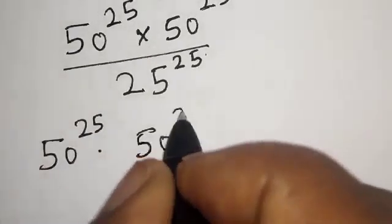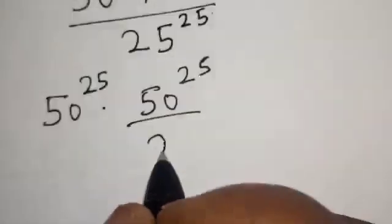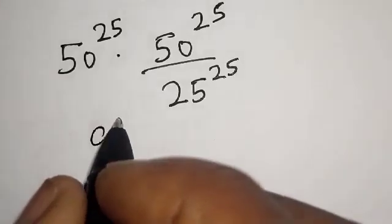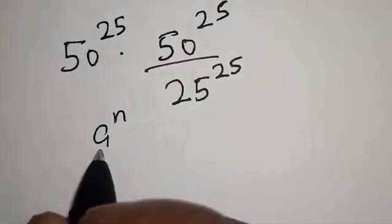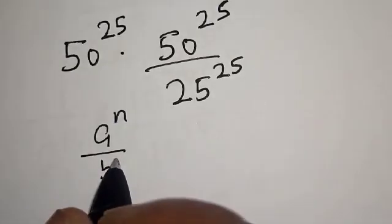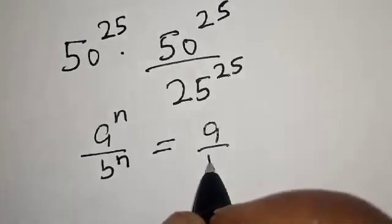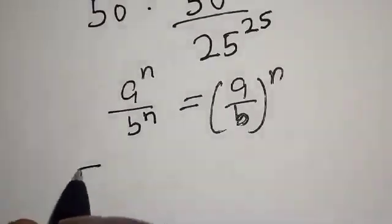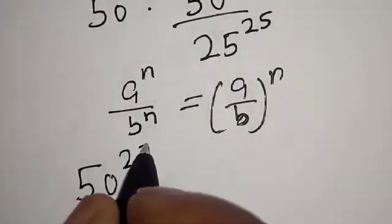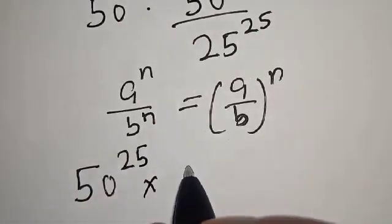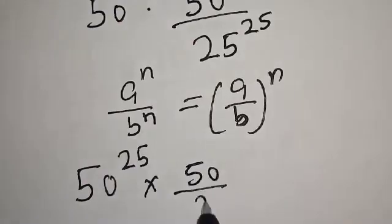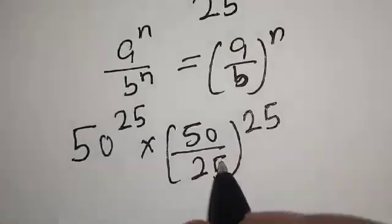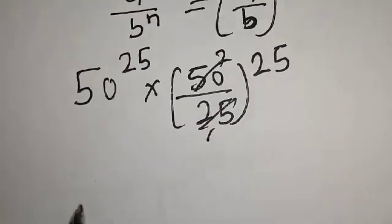Then we have 50 raised to power 25, multiplied by — now if you have a raised to power n over b raised to power n, this equals a over b, raised to power n. So we get 50 over 25, raised to power 25, which simplifies to 2 raised to power 25.